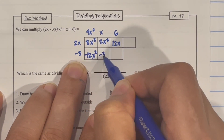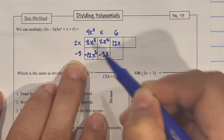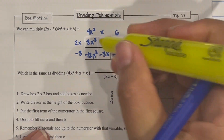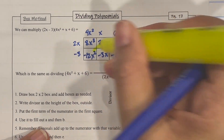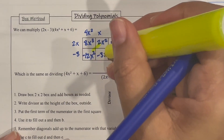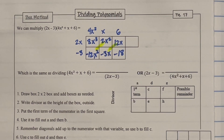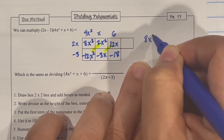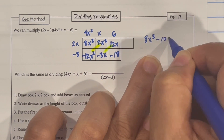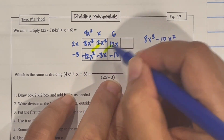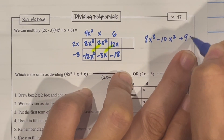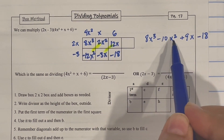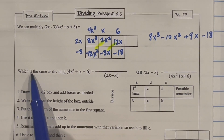Negative 3 times x is negative 3x, and negative 3 times 6 is negative 18. You have to understand how to multiply in order to divide. Notice that the diagonals have the same term, which means you can combine them. So it's 8x cubed, then combining the diagonals gives negative 10x squared, then plus 9x, and then minus 18. That's what you get when you multiply these two.